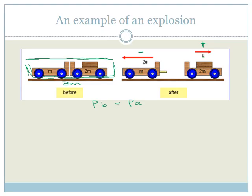For an explosion, the initial velocity is zero because the two tracks are stationary before the spring releases. Since they're stuck together they act as one body, so we write: mass of the two tracks × initial velocity = mass of track one × final velocity of track one + mass of track two × final velocity of track two. That's 3m × 0 = m × (−2u) + 2m × u.